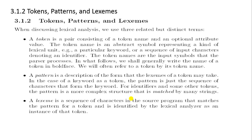These are the key terms we will use throughout this module: tokens, patterns, and lexemes. A token is a pair consisting of a token name and an optional attribute value. The optional attribute value is stored inside the symbol table. A token name is an abstract symbol representing the kind of lexical unit — a particular keyword or sequence of input characters denoting an identifier. Token names are the input symbols that the parser processes. We shall generally write token names in boldface.